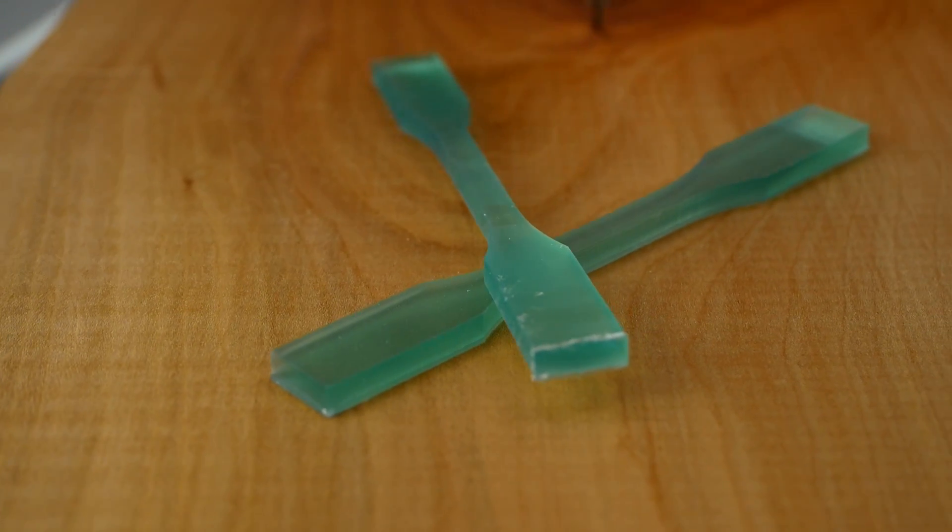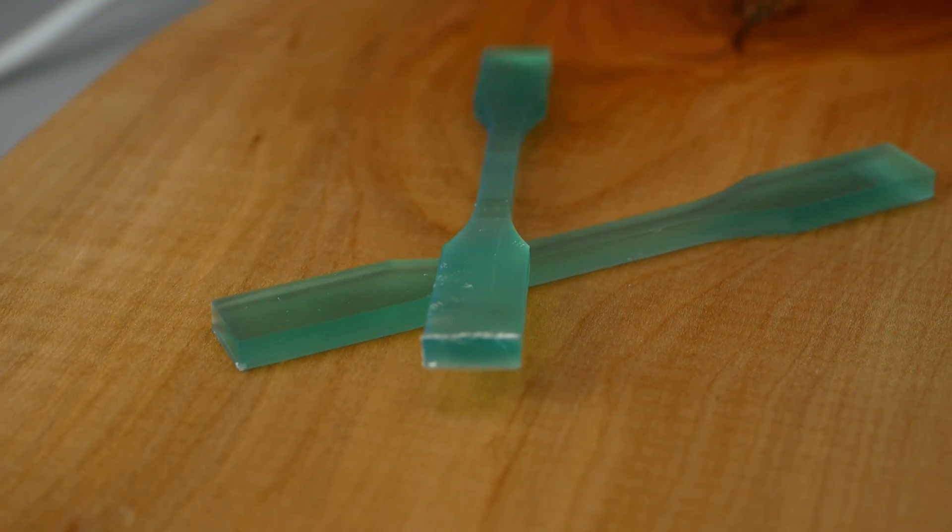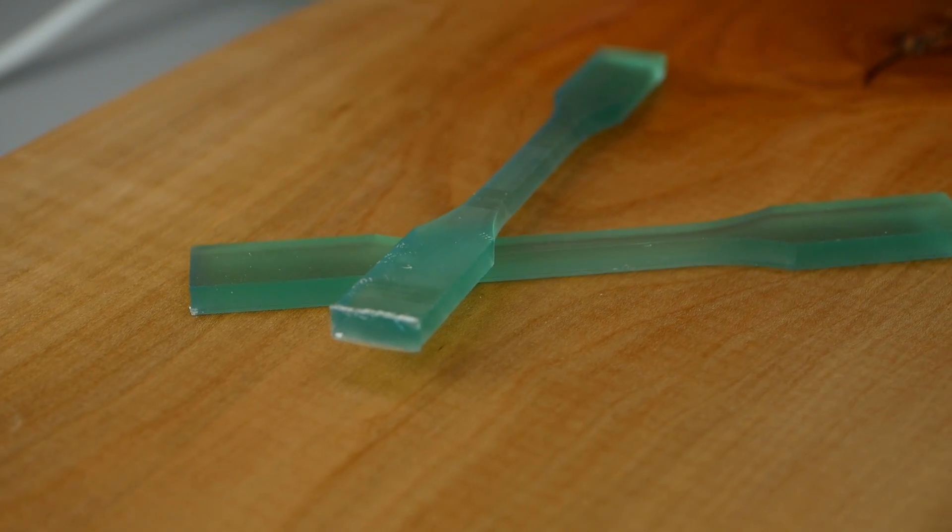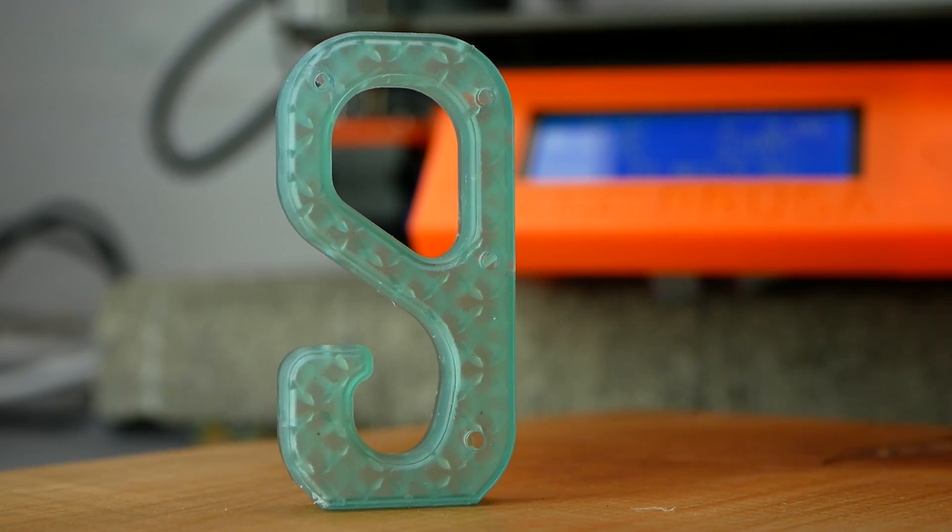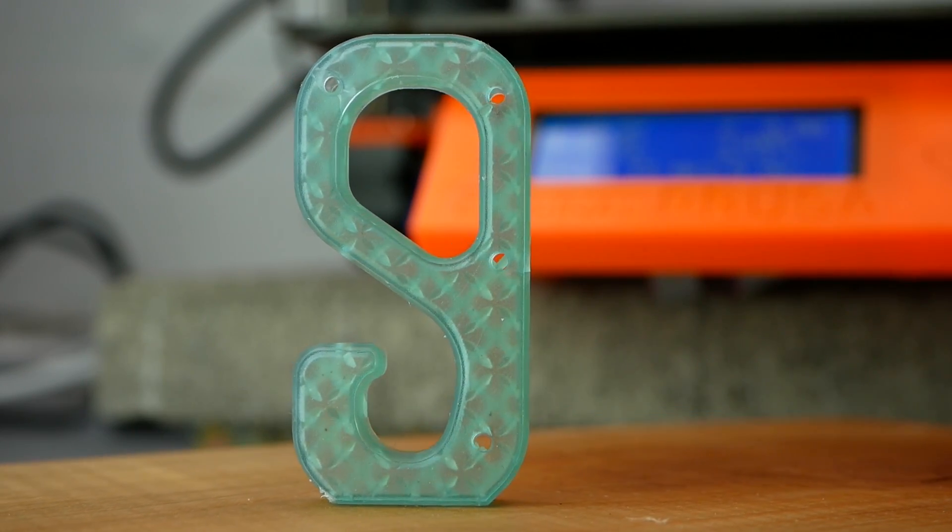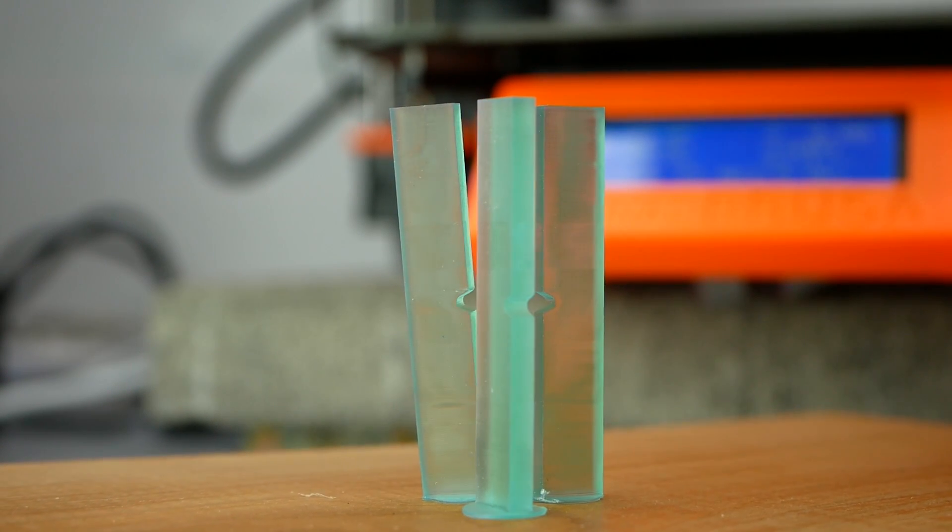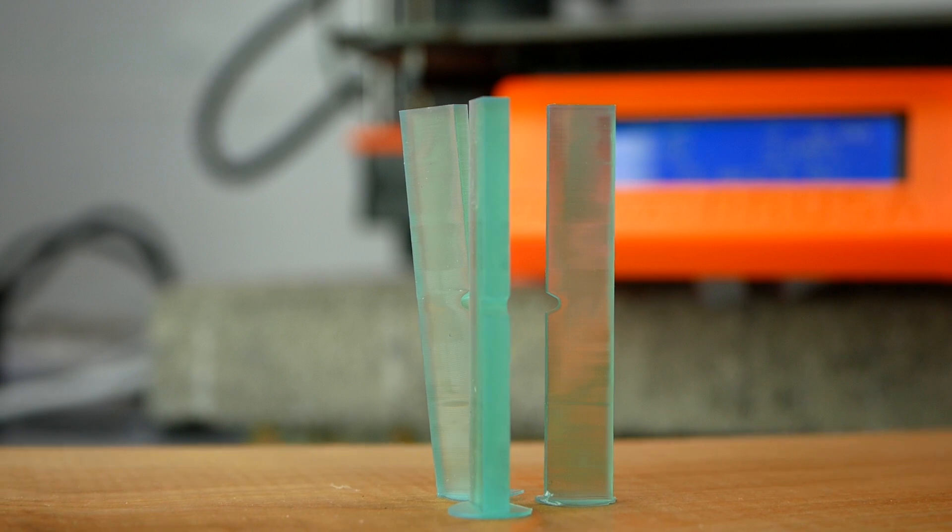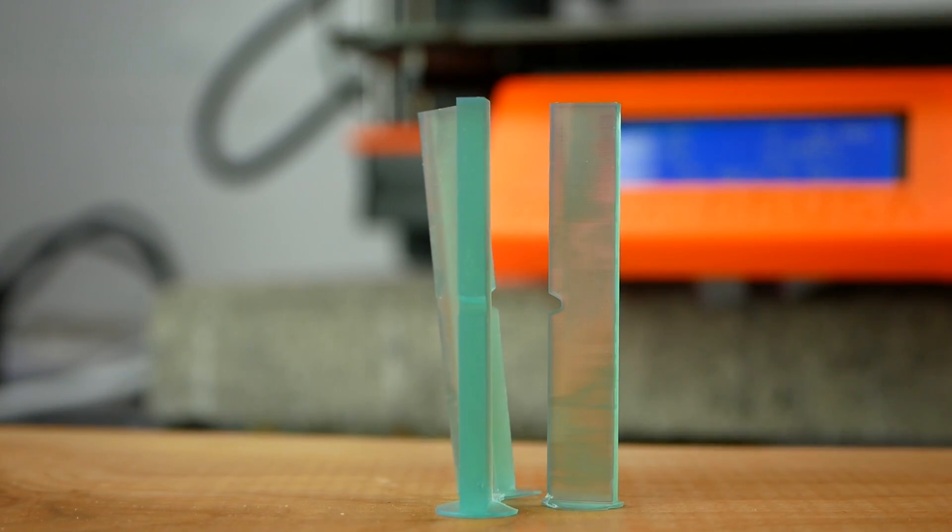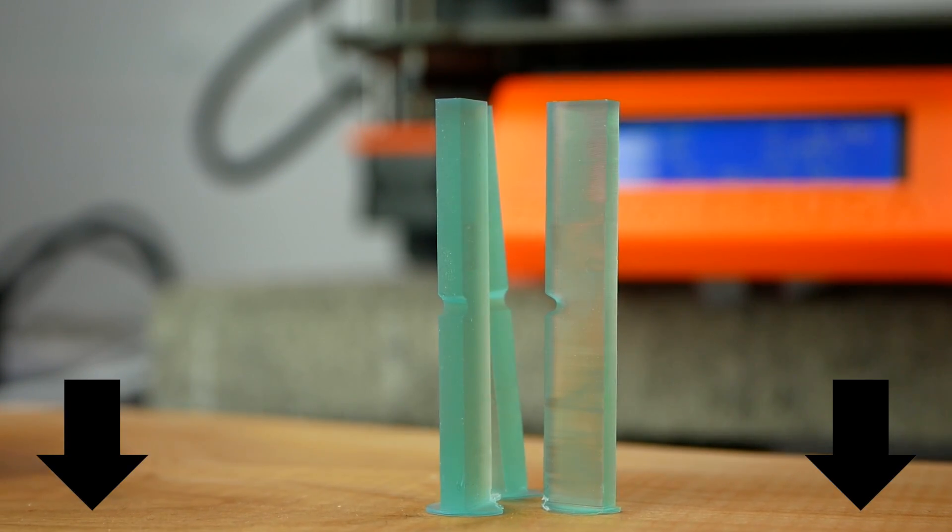The parts turned out with a blue-green color, slightly matte surface and partly translucent, an appearance I really liked especially since you can see the inside of the parts. Now let's finally get to the mechanical tests you probably have all been waiting for. But before I talk about the results, let me know in the comments how you think the tough resin compares to FDM prints.